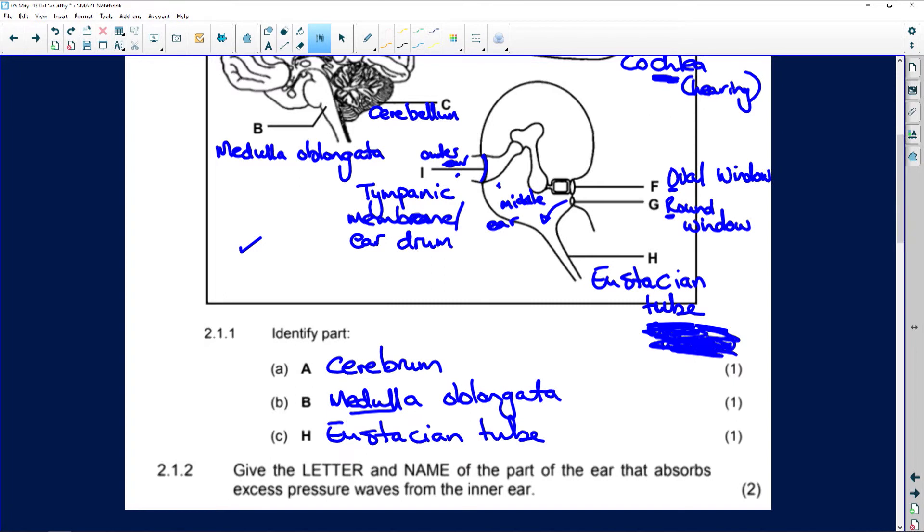Now, it says, give the letter and the name of the part of the ear that absorbs excess pressure waves from the inner ear. Well, I told you just now, it is the round window. Sound waves go in that way to the cochlea and the excess comes out here. And what it does is it actually prevents an echo. That's why we don't hear echoes.